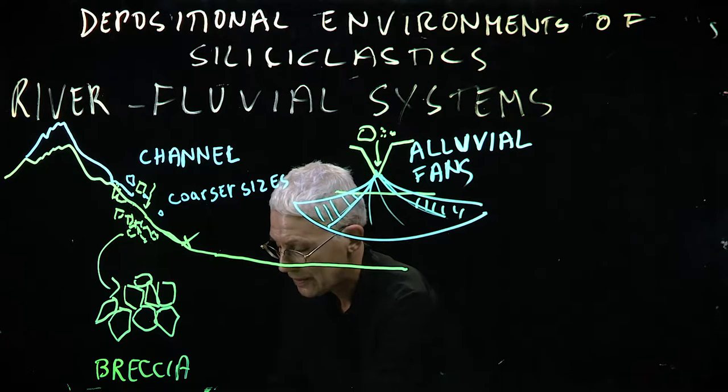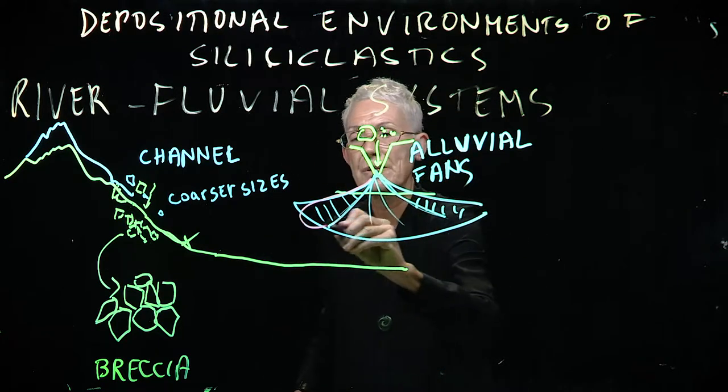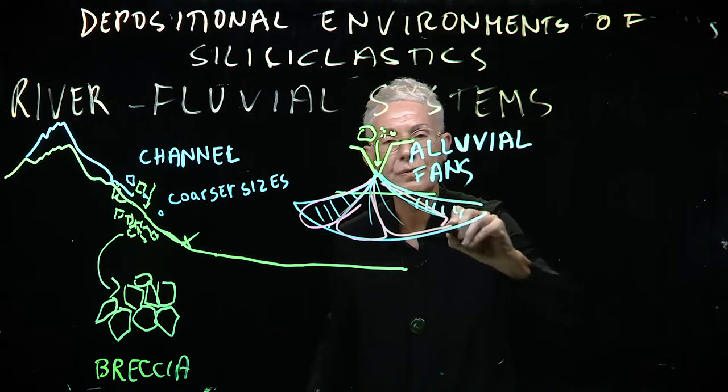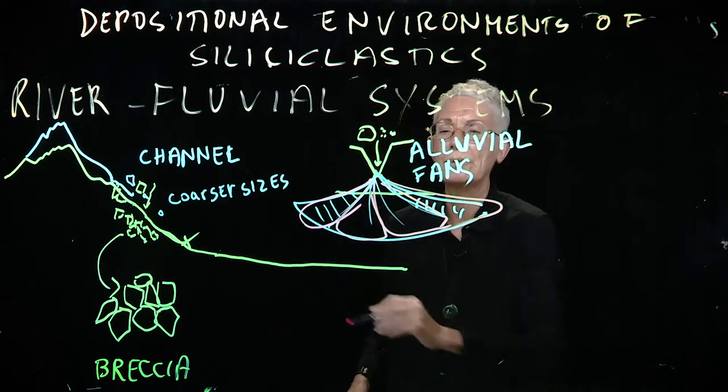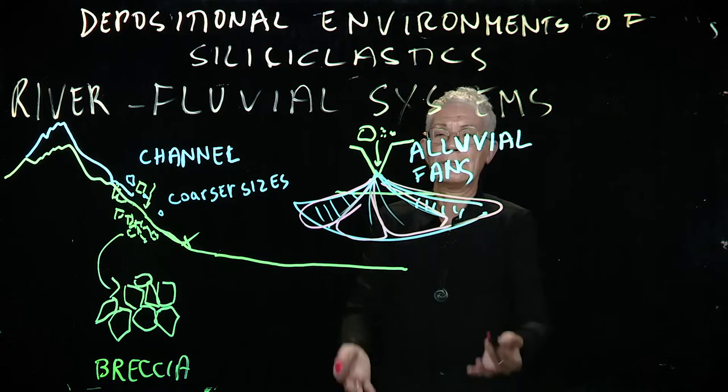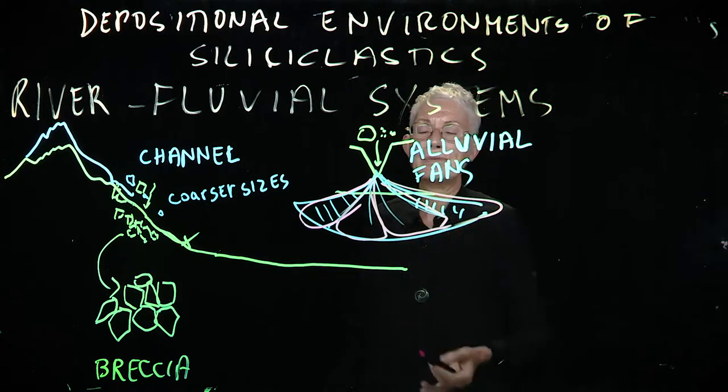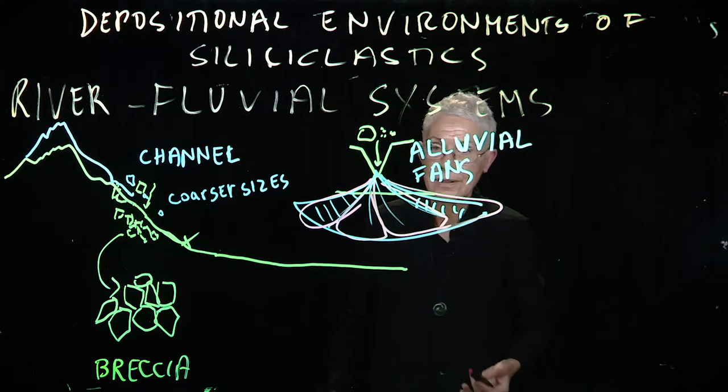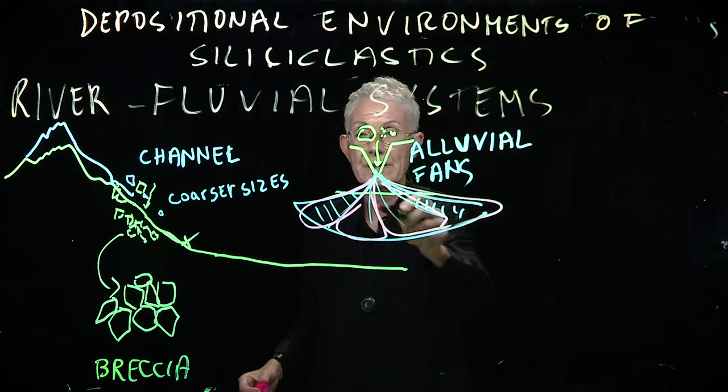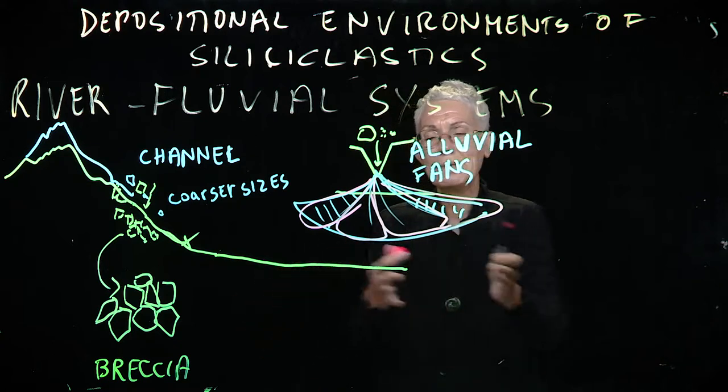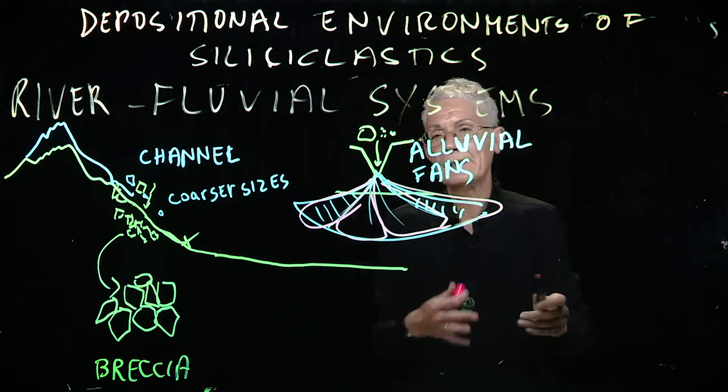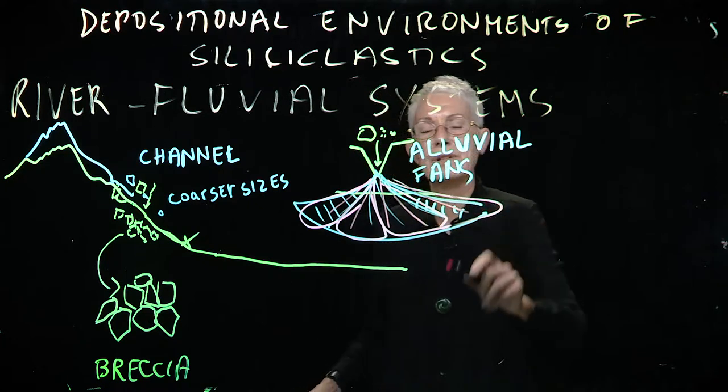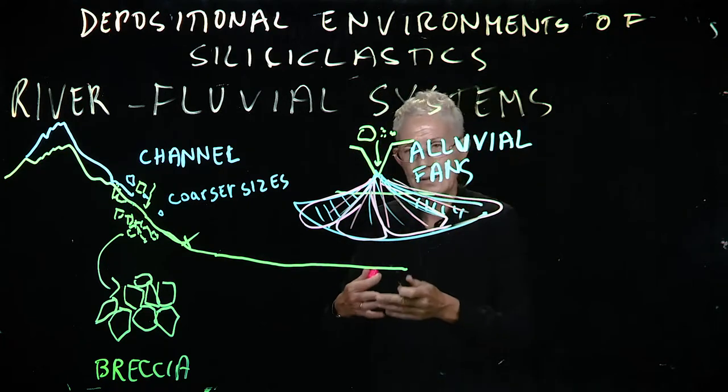So it forms what are called lobes. So this grows like this. And each of these lobes will be due to the discharge of one of these, let's call it catastrophic floods, that at times change their direction. And that's why, in the end, you have such a beautiful fan.